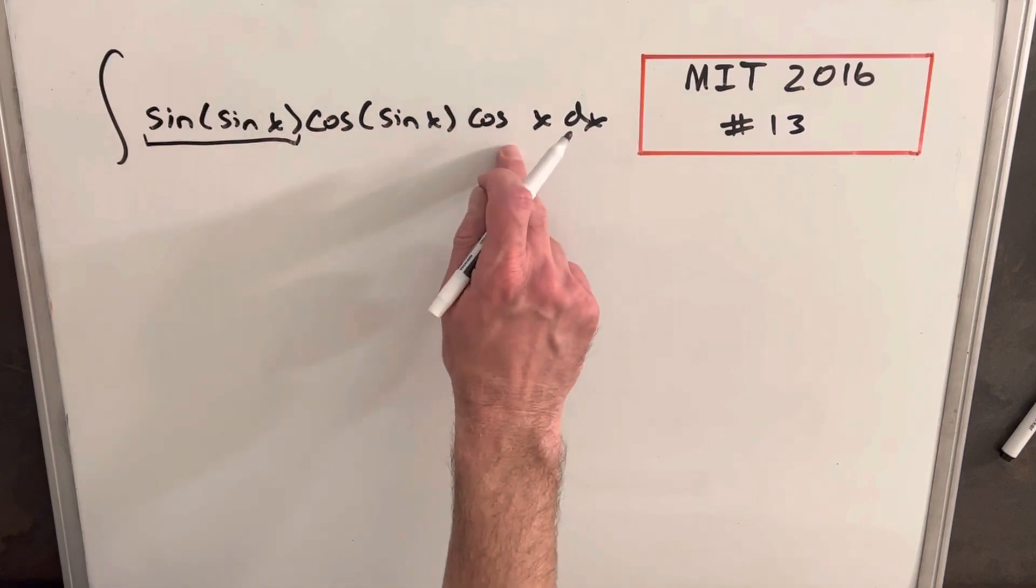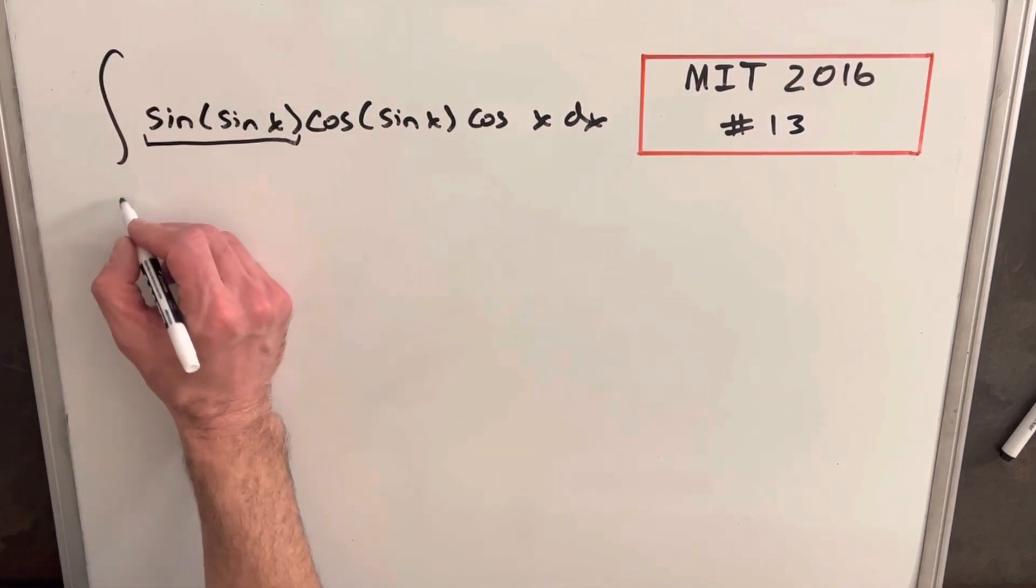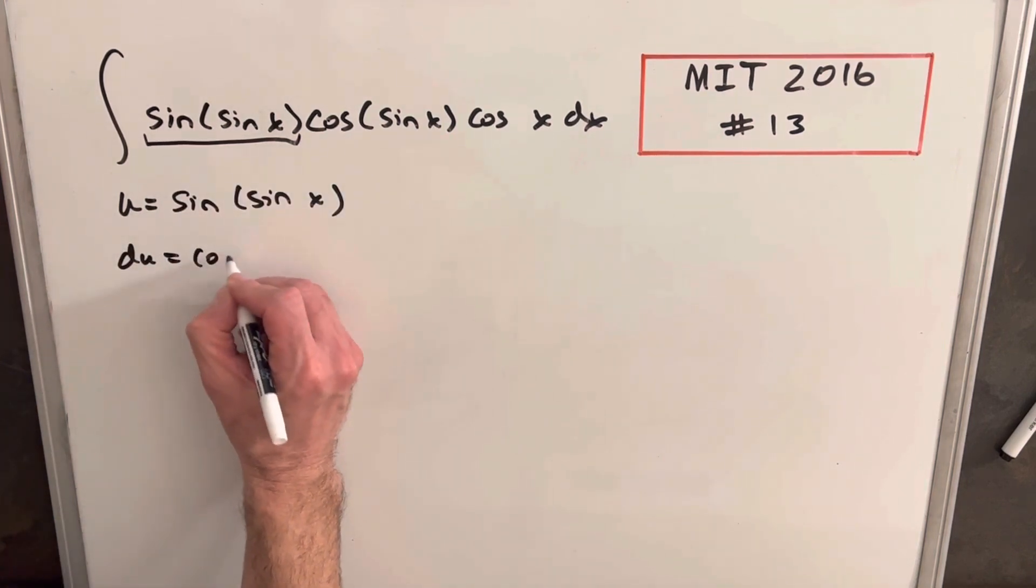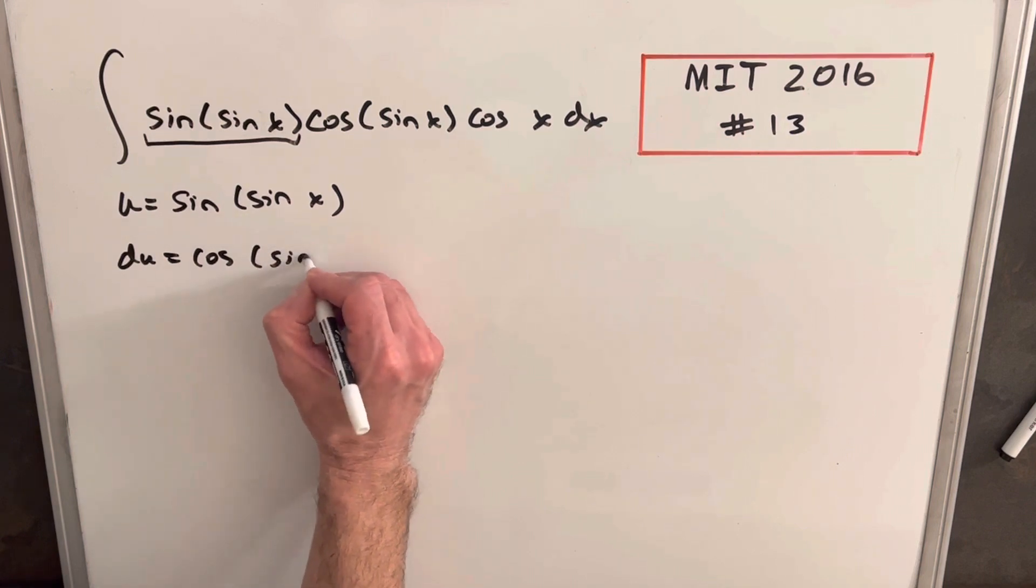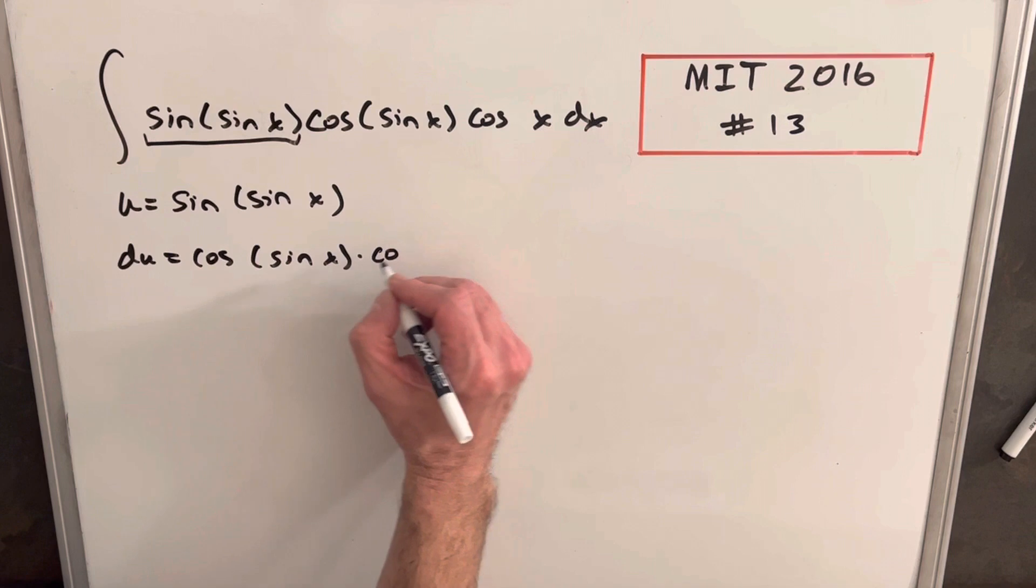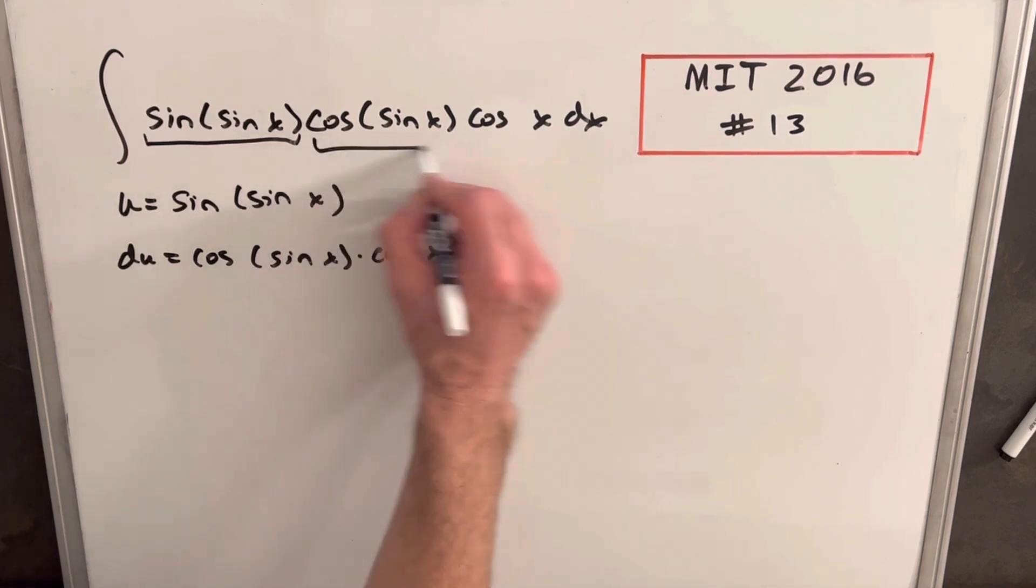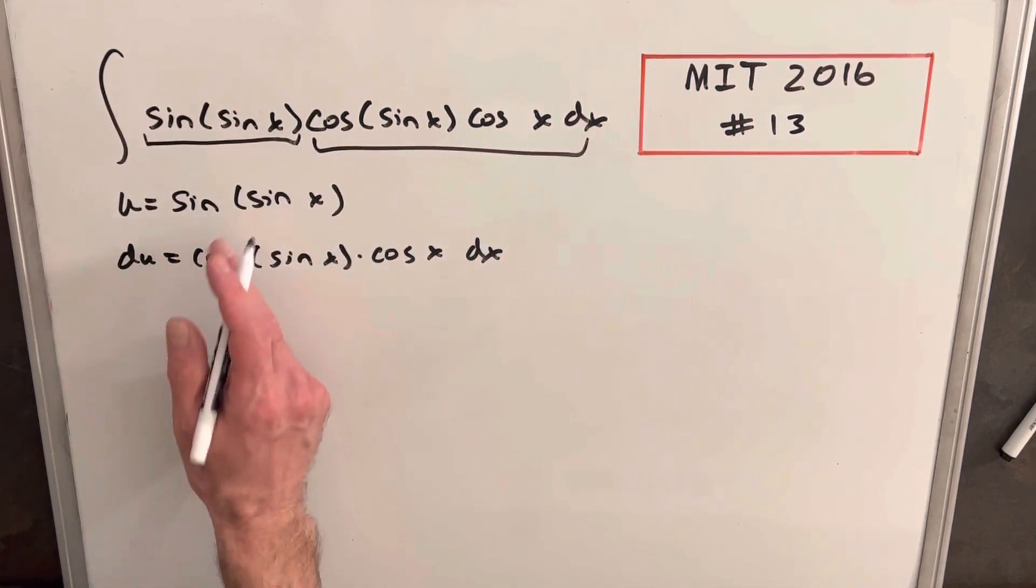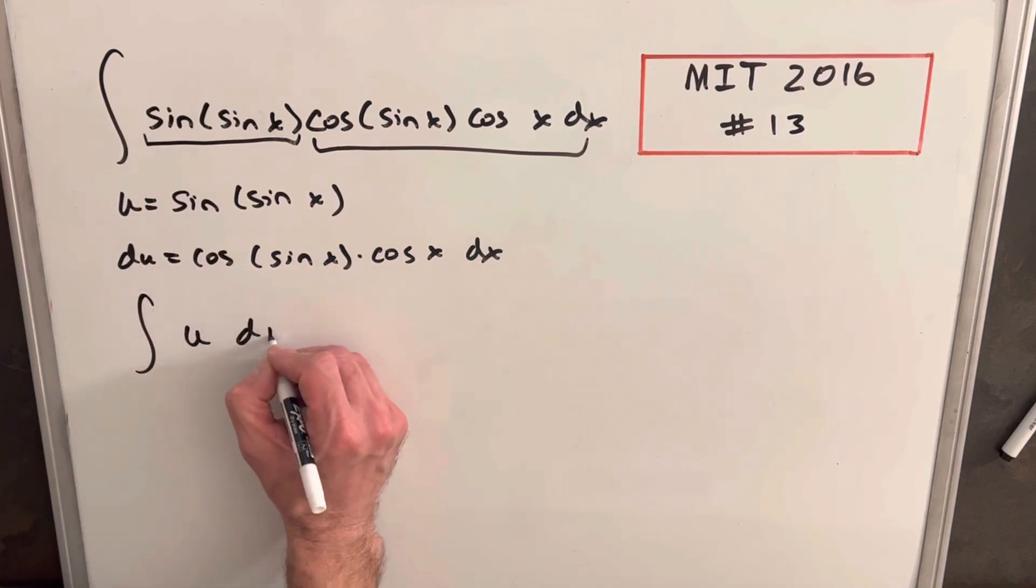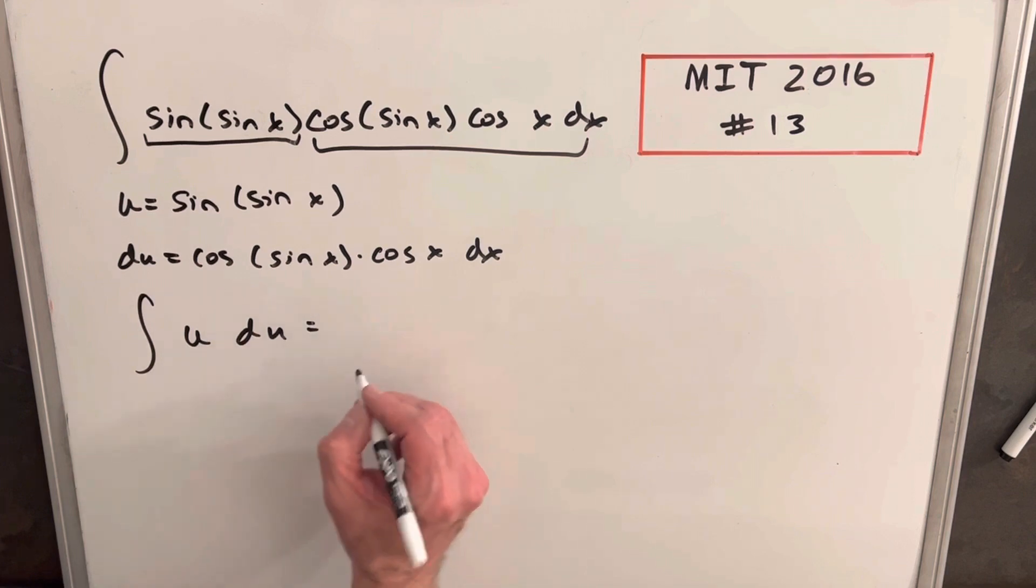When we take the derivative of this thing, like I said, we'll have cos(sin x), but then we'll have to differentiate our sin x and we get another cos x dx, which is just all of this. So what that'll do is it gets our integral real simple. We're just going to have integral of u du. Integrating that is u squared over 2 plus c.